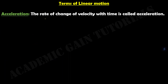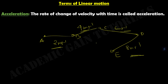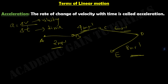The last topic is acceleration. The rate of change of velocity with time is called acceleration. If a body moves from A to B at 2 m/s, B to C at 4 m/s, C to D at 6 m/s, and D to E at 8 m/s, the rate of change of velocity over time gives us acceleration. The formula is a = ΔV/ΔT — rate of change of velocity divided by time.